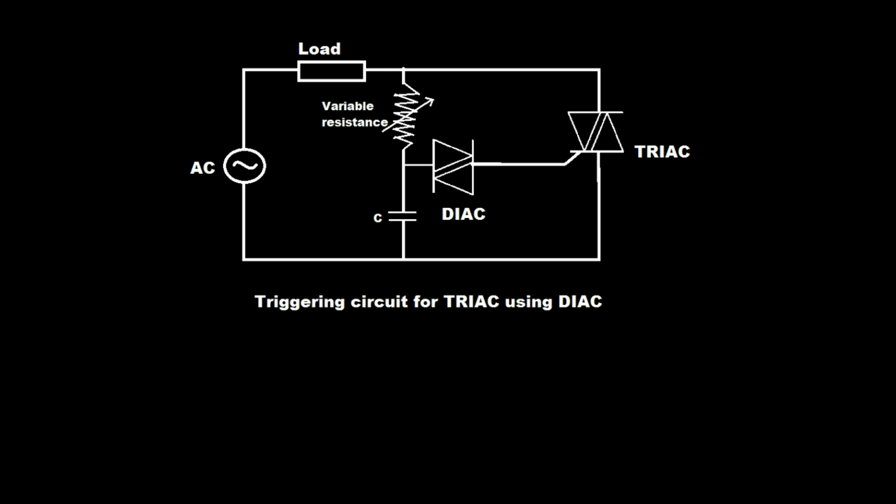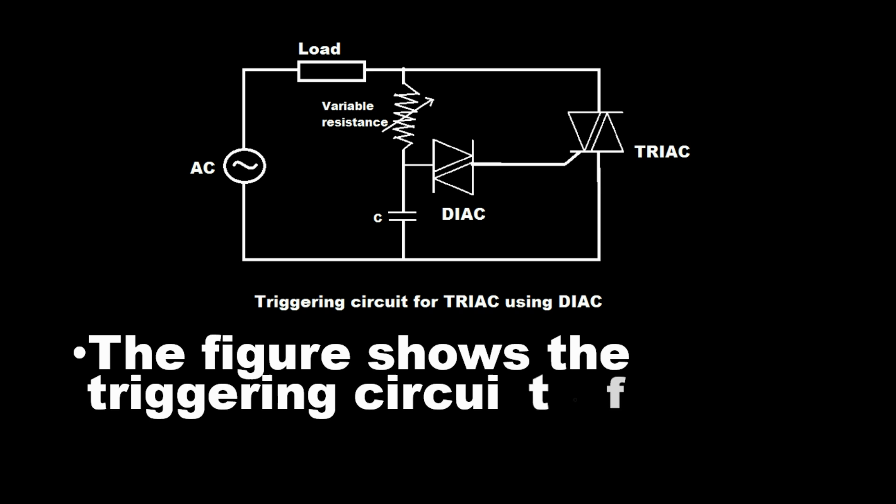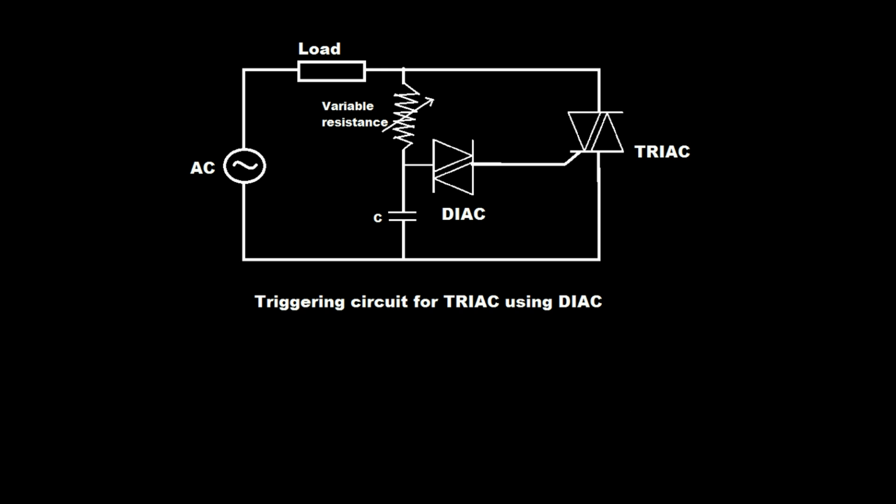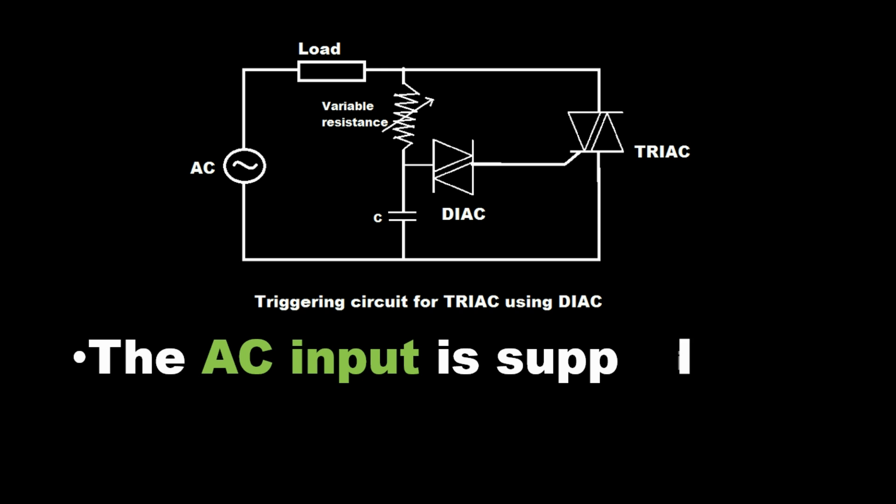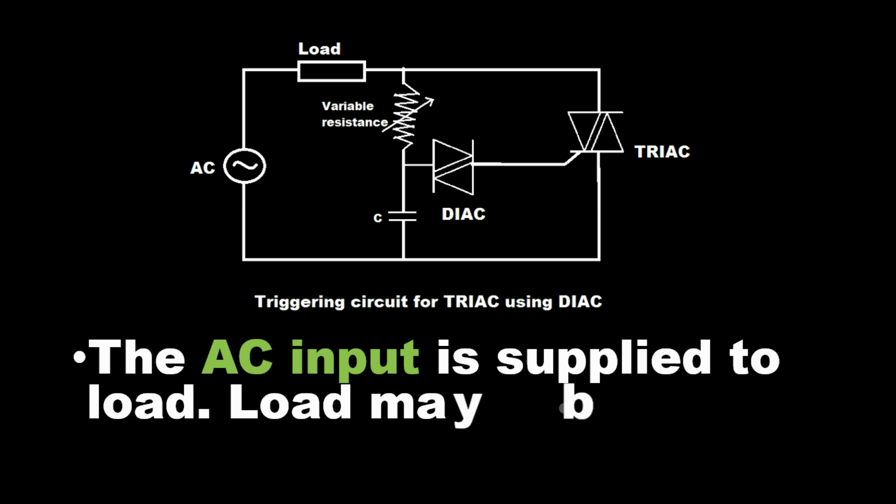The figure shows the triggering circuit for TRIAC using DIAC. The AC input is supplied to load. Load may be a lamp.